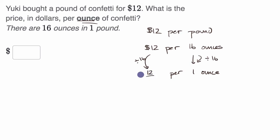So 12 divided by 16 is the same thing as 3 fourths. Just divide both of them by four. And so this is 0.75, or 75 cents, 75 cents per ounce, or 75 hundredths of a dollar per ounce. So 0.75. And we're done.